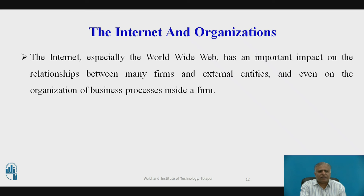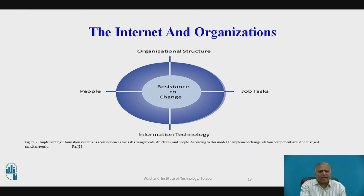The next part is the internet and organizations. The internet, especially the World Wide Web, has an important impact on the relationships between many firms and external entities, and even on the organization of business processes inside a firm. The internet increases accessibility, storage, and distribution of information and knowledge for organizations. Firms can now deliver their internal operating procedure manuals to employees at distant locations by posting them on corporate websites, saving millions of dollars in distribution costs. A global sales force can receive nearly instant product price information updates using the web, or instructions from management by email or text messaging on smartphones. This diagram shows organizational structure, job tasks, information technology, and people — all components that must be changed simultaneously when implementing information systems.